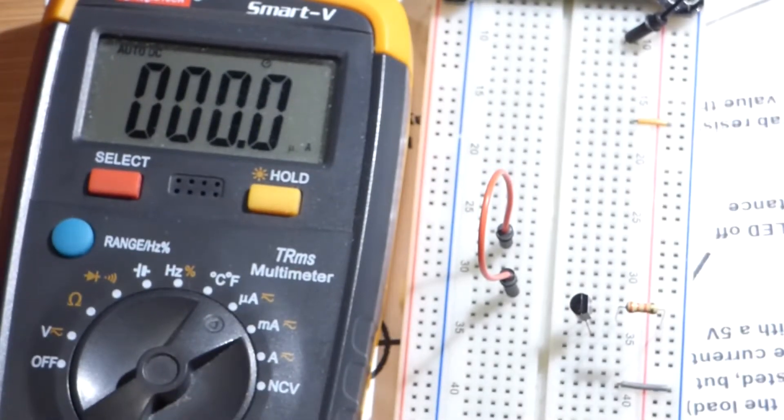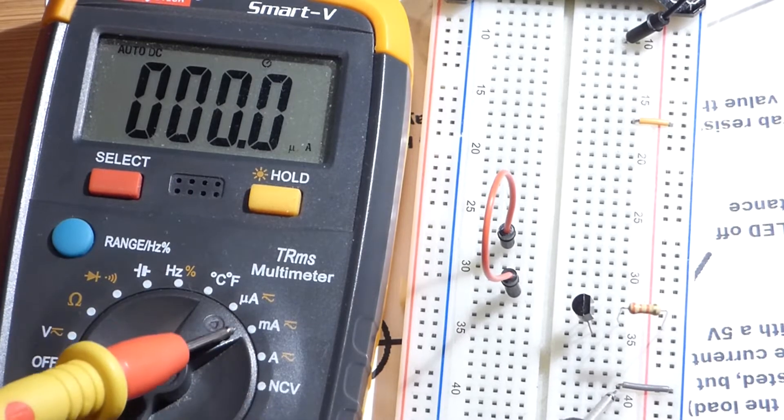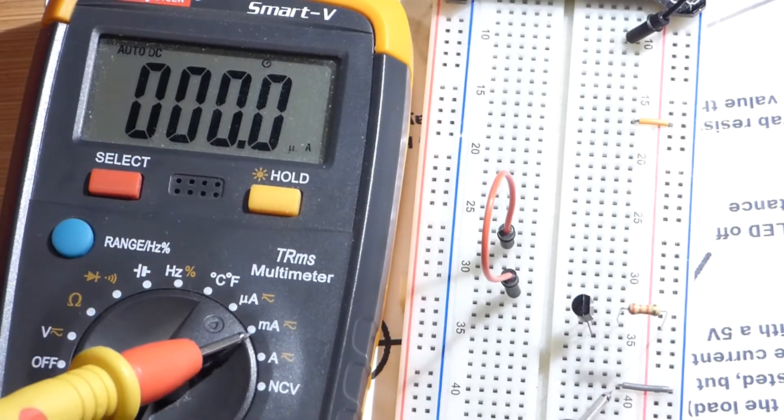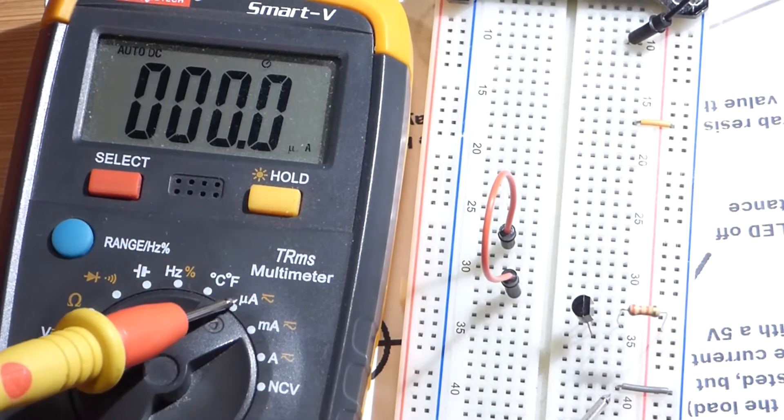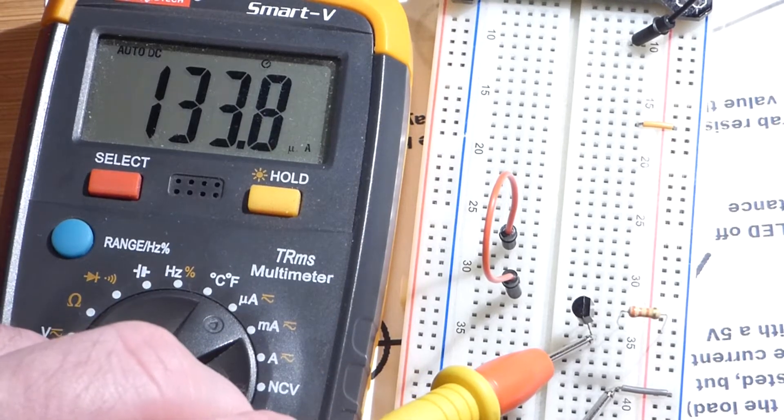It kind of looks like a funny looking U. A micro-amp is one millionth of an amp. It takes one million micro-amps to equal one amp, and 1,000 micro-amps to equal a milliamp. So take a look here.